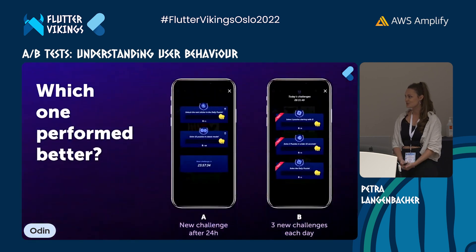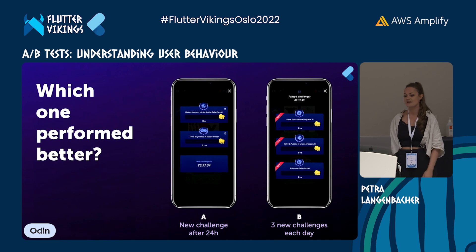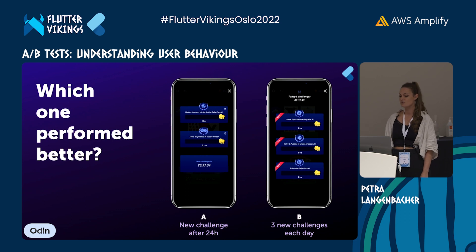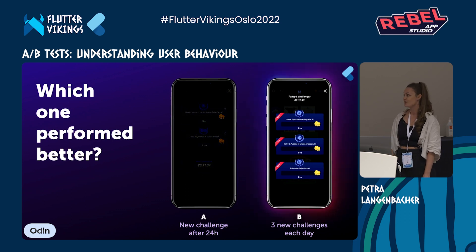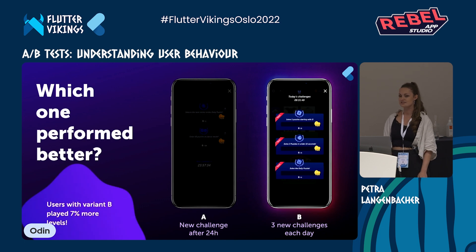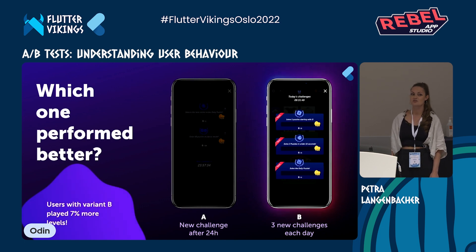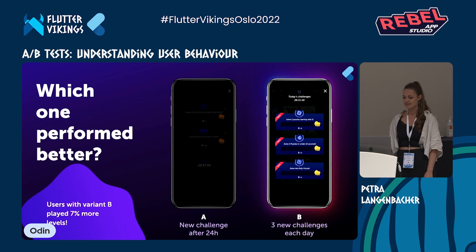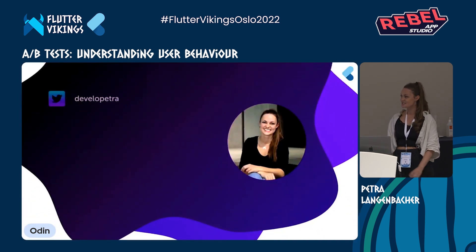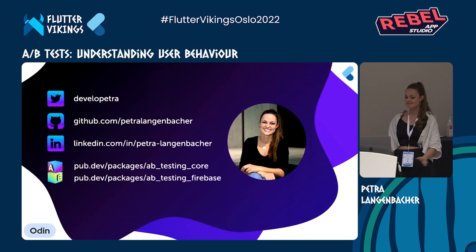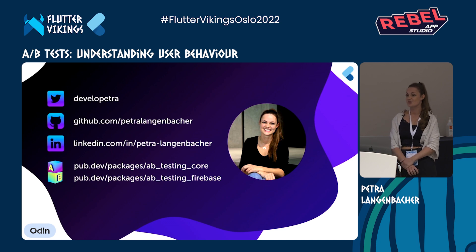Back to my initial question — which variant performed better? We compared different metrics for both variants, like retention, coin spend, and revenue. In most metrics, the variants performed roughly the same. But in terms of level play, variant B performed about seven percent better — so that's the version you'll now find in our app. I hope you got some helpful insights into A/B testing. If you have any questions, I'm happy to talk afterward, or you can find my contact info on this slide. Thank you!